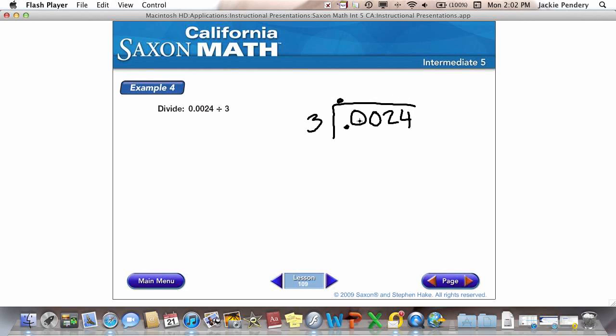The other option is 3 goes into 0, 0 times. I multiply. I bring down. 3 goes into 0, 0 times. Again, I multiply. I subtract. I bring down. 3 goes into 2, 0 times. Multiply. Subtract. Finally, bring down the 4. And 3 goes into 24, 8 times.